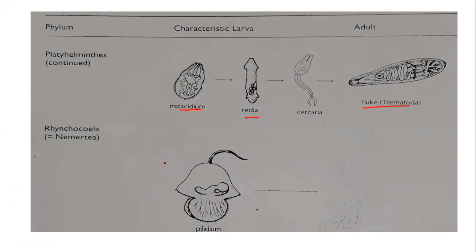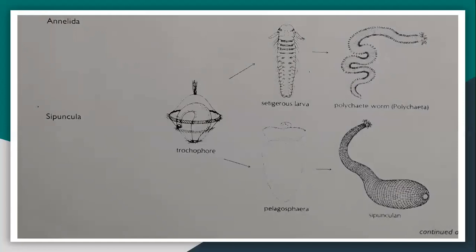After platyhelminthes we come to nemathelminthes, and then annelida. The larva of annelida is the trochophore larva. Annelida also has two different stages: the setegeious larva and the pelagosphera larva, and it becomes polychaete worms.